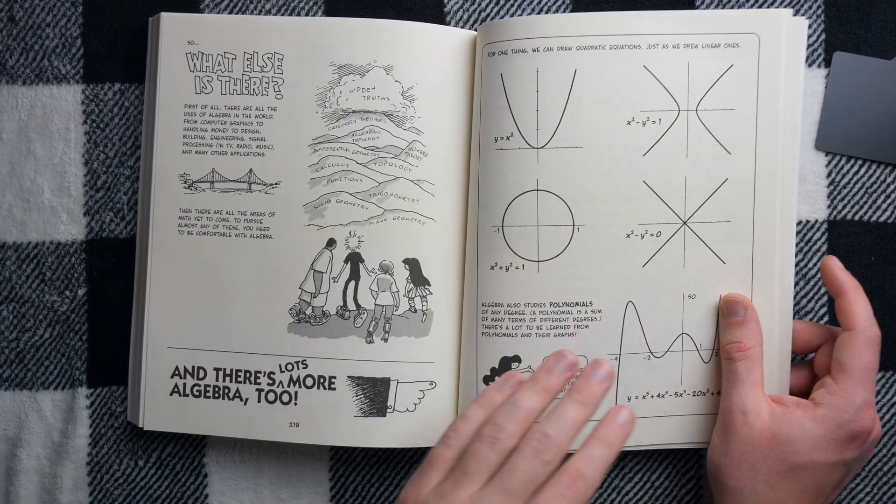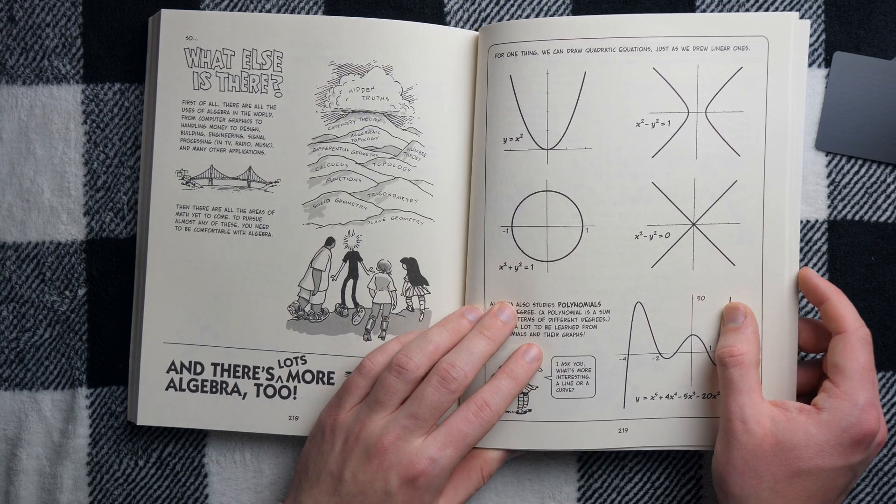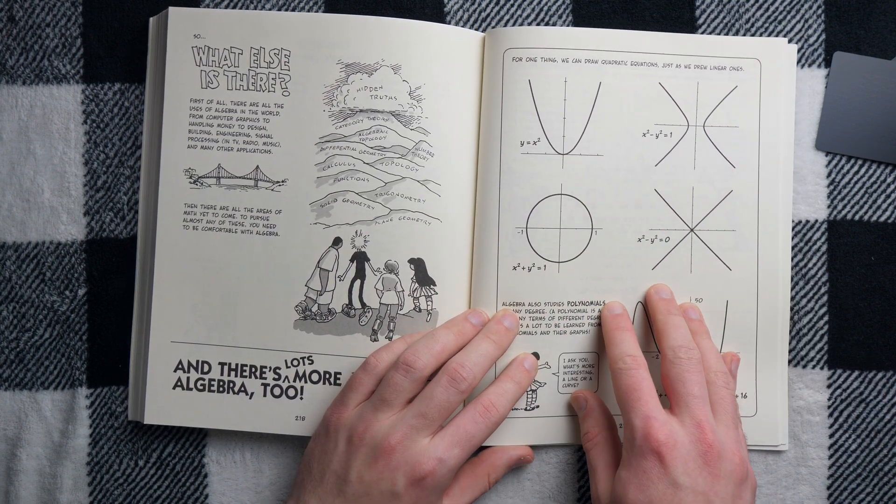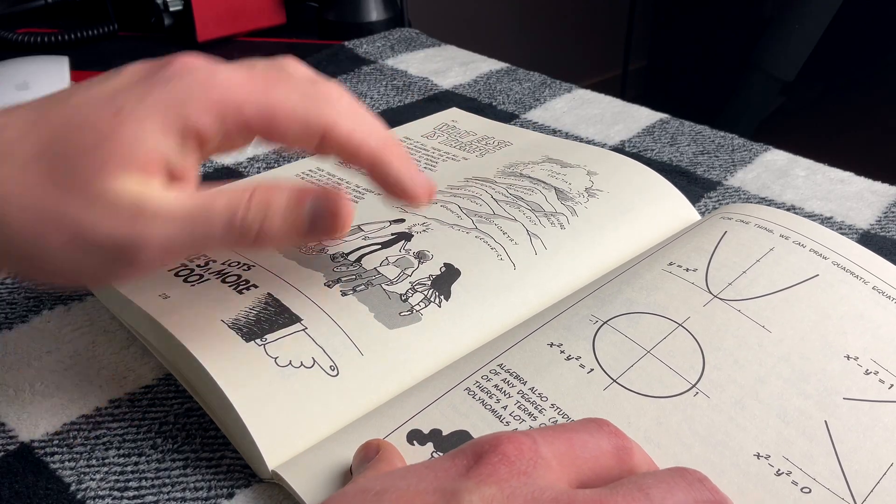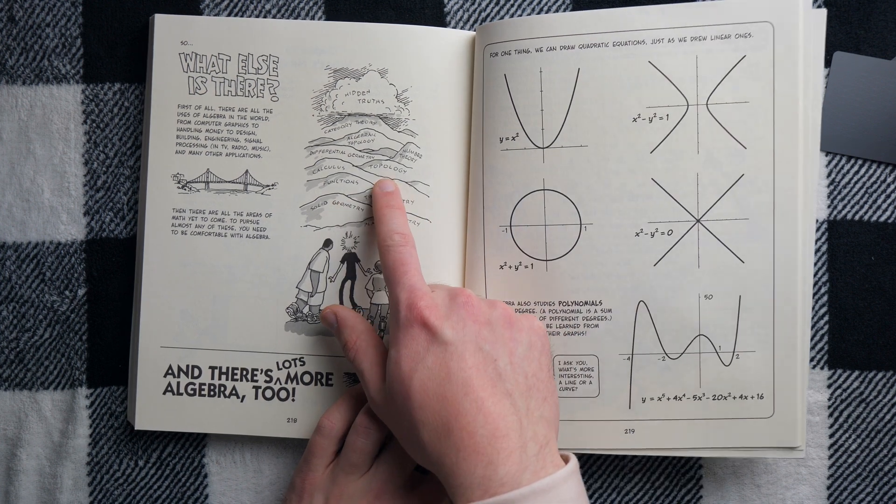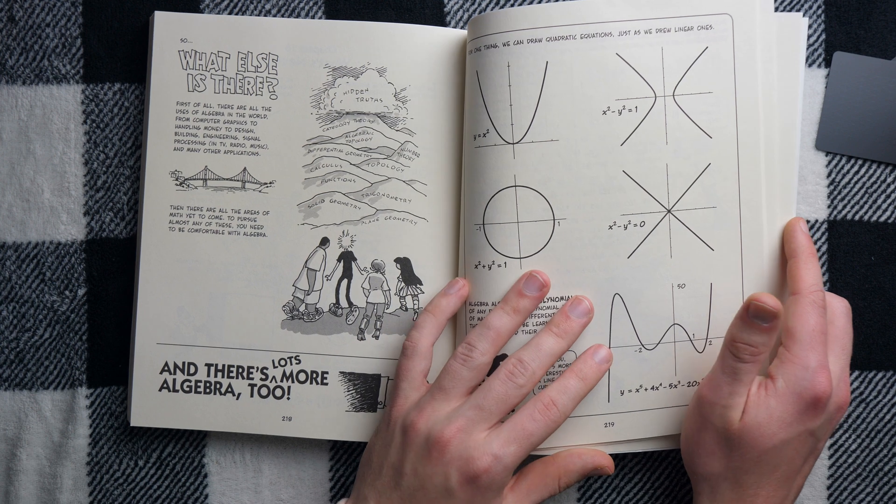And then you've got this nice final section on what's next, right? What else is there after algebra? Oh, there's so much more cool stuff you can do. There's more graphs. And I love this little picture of the mountains of math that come after plain geometry, functions, topology, category theory, the hidden truths way in the distance, really cool.